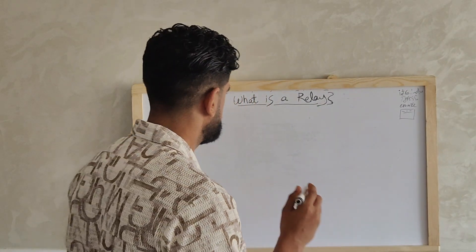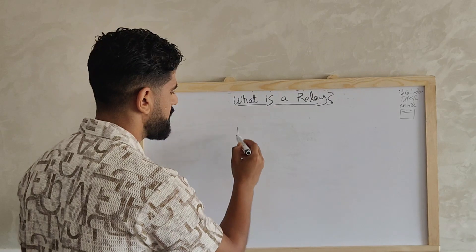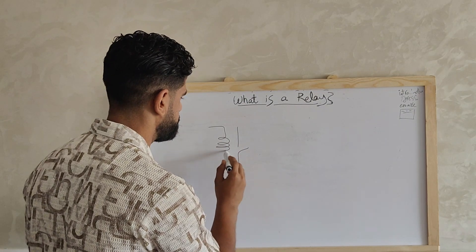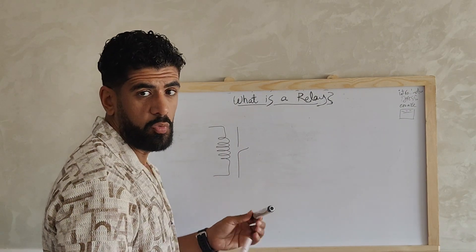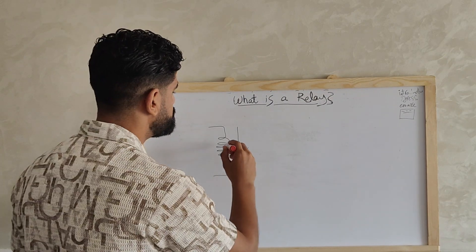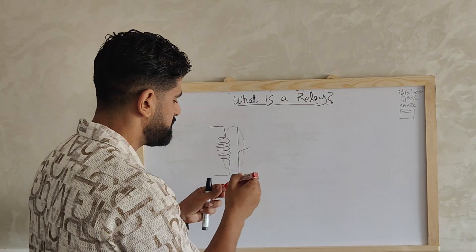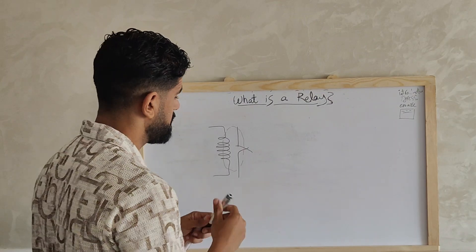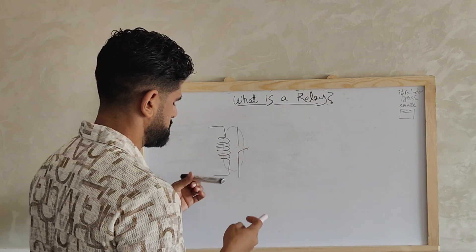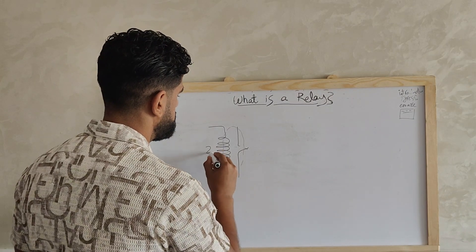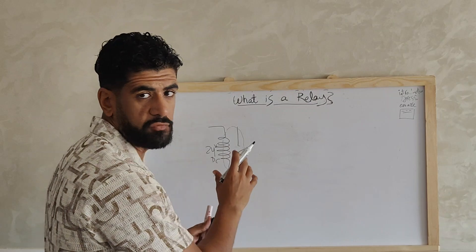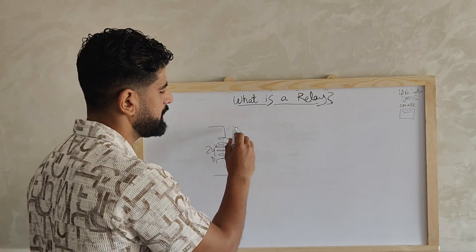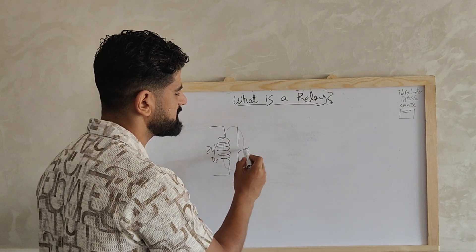An electrical relay is a switch that connects two points to each other. Inside the relay we have a coil. This coil, when it's energized, will generate an electromagnetic field that will attract this switch to be closed. Let's say that this coil is 24 volt DC — it has a rated voltage of 24 volt DC — so when we apply 24 volt DC to this coil it will generate an electromagnetic field and will let this contact be closed.